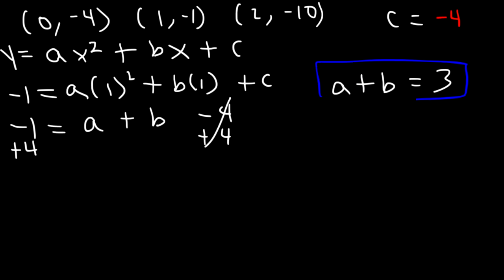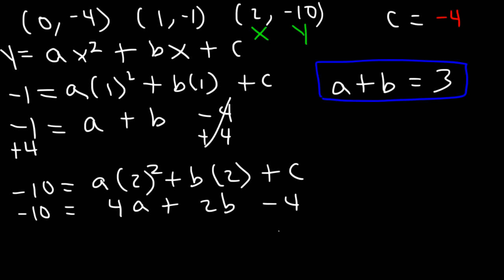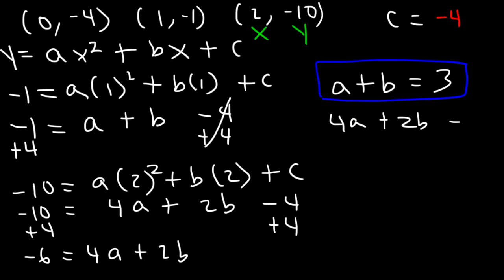Using the third point (2, -10): negative 10 equals a times 2 squared plus b times 2 plus c. Since 2 squared is 4 and c is negative 4, adding 4 to both sides gives negative 6 equals 4a plus 2b. Now we have two equations and two unknowns, so we can use elimination.